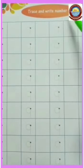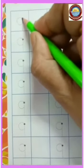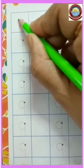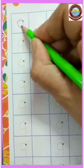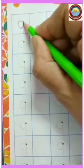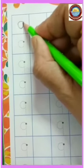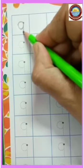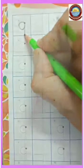Let's start tracing. Start from the dot, make a curve, come down, then go up and touch the dot from where you have started, and then make a standing line like this. Number nine. Repeat it again with me. Number nine.